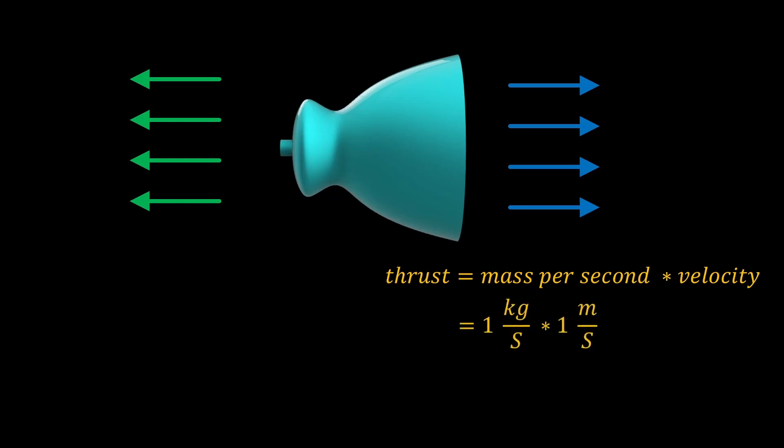For example, we might be throwing one kilogram of mass out every second, and we might be throwing it out with a velocity of one meter per second. That gives us one kilogram meter per second squared. That's a mouthful, so we write it as one newton. This is why thrust is measured in newtons, though you can also measure it in pounds of force if you prefer.